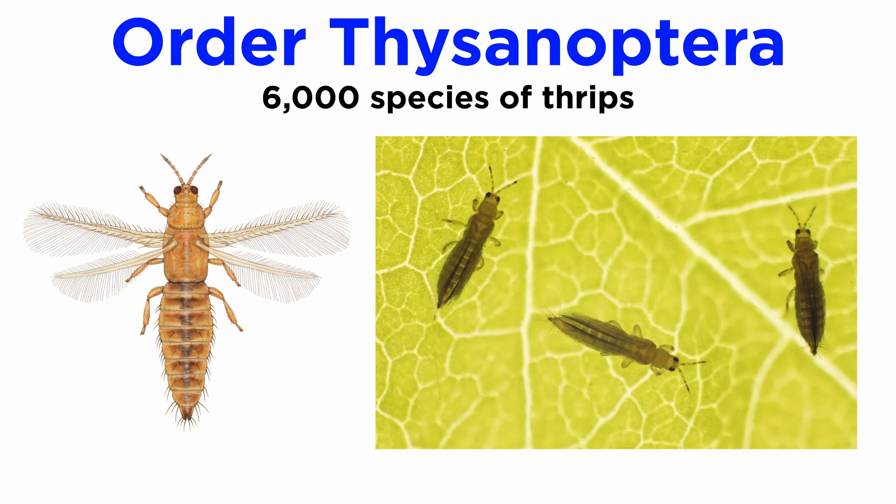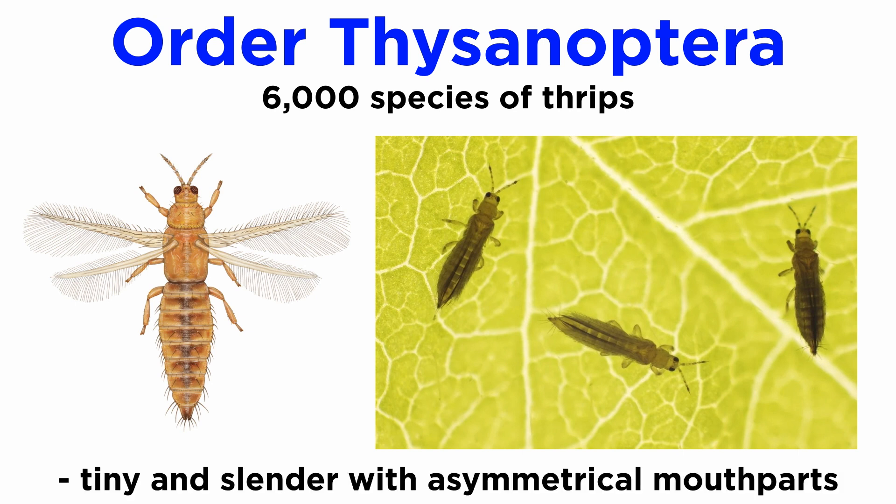Members of order Thysanoptera are commonly called thrips. The 6,000 described species of thrips are tiny, slender insects with unique, asymmetrical sucking mouthparts. Many species feed upon plant material, leaving a distinctive scarring on the plant tissue. Most species cause very little damage, and some are essential pollinators, but aggregations of some pest species can cause considerable damage to crops.